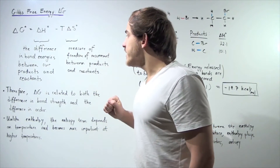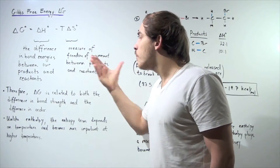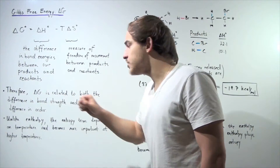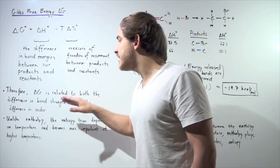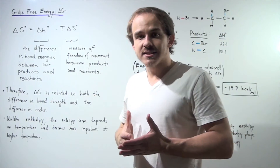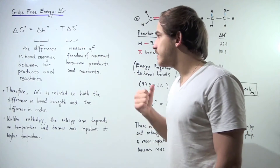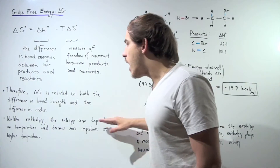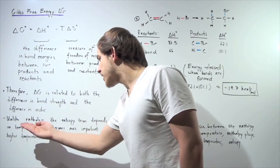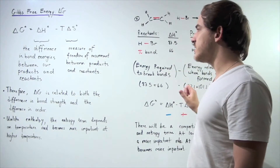So we see that our change in Gibbs free energy is related to both our enthalpy and our entropy — our difference in bond strength as well as the difference in order. The more order we have in our products, the smaller our change in S is, the more negative it is. Unlike enthalpy, the entropy term depends on temperature and becomes more important at higher temperatures.